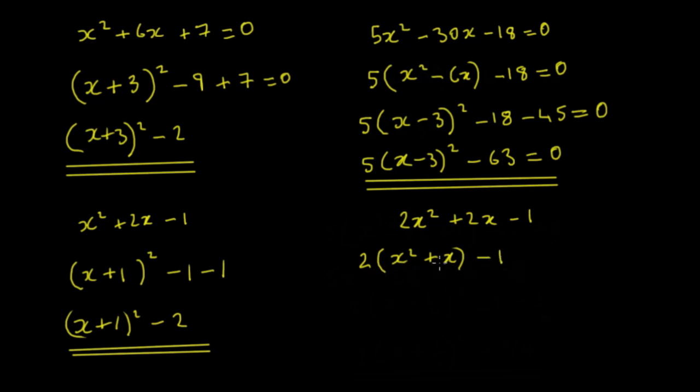So now we can go ahead and complete the square, so we're going to have our 2, and we'll have our x plus 1 half all squared minus 1.